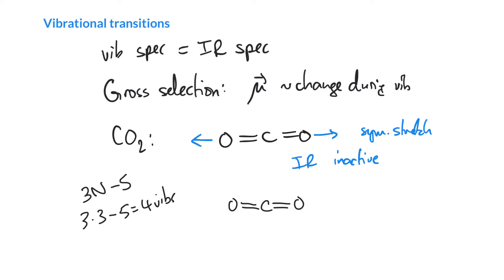So another possible vibration is one bond gets longer while the other bond gets shorter, and to keep the center of mass the same, that carbon has to move slightly. And so this leads to a lengthening of the bond on the right and a contraction of the bond on the left.